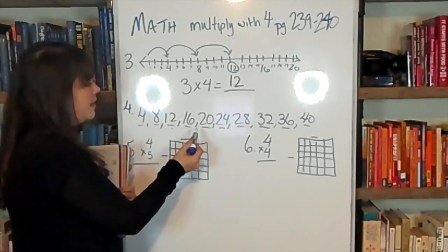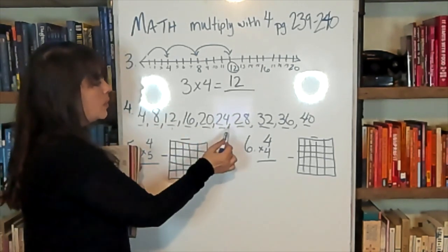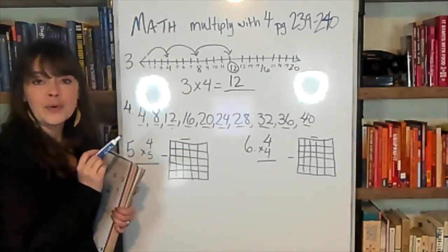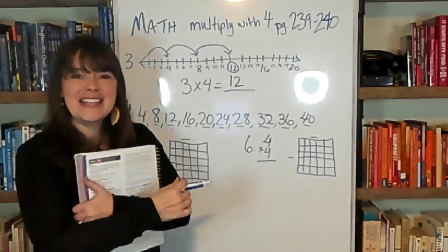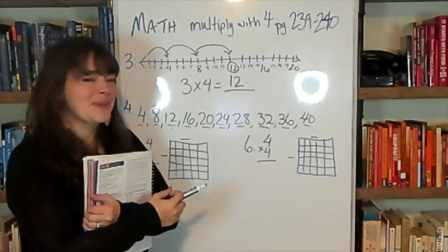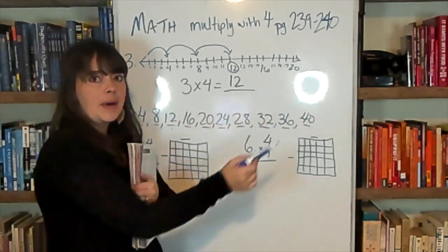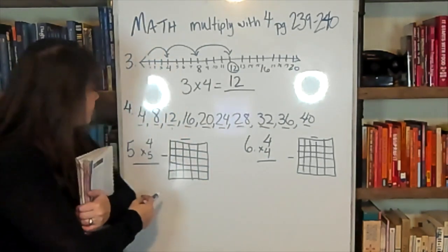4, 8, 12, 16, 20, 24, 28, 32, 36, 40, 44, 48. Singing 4's is really great. This is just counting up by 4's every time.